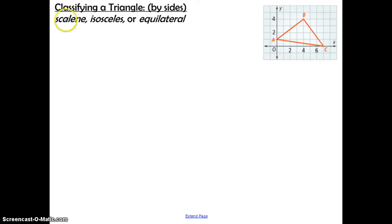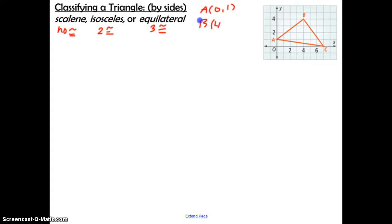Let's take a look at some example problems. In this problem we need to classify the triangle by its sides. Scalene means no congruent sides, isosceles means two congruent sides, and equilateral means all three sides are congruent. The first thing we want to do is find the coordinates of each of these points: A is (0, 1), B is (4, 4), and C is (7, 0). In order to decide whether these side lengths are the same or different, we need to find the length of each side, and to find length we want to use the distance formula.